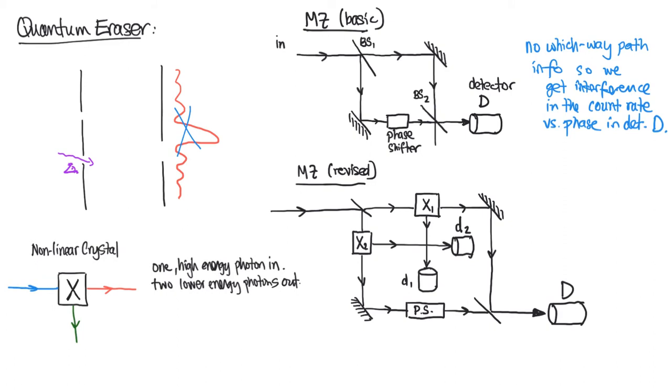A non-linear crystal in the context of this experiment means we send in one photon of one color and it gets converted into two separate photons of different colors than the input. In particular we'll send in one high energy photon and we get two lower energy photons out such that the energy of the output photons add up to equal the energy of the incoming photon. So here we're trading the energy of a photon for a number of photons and the exiting photons are correlated. We have two of those devices here we'll call them X1 and X2 for these nonlinear crystals and now let's look what happens.